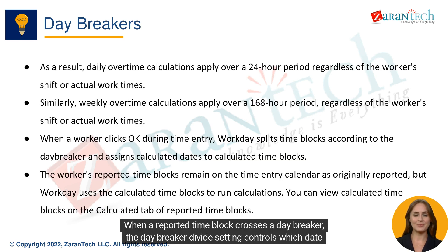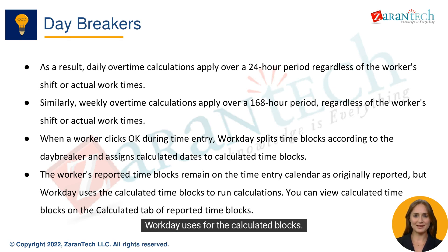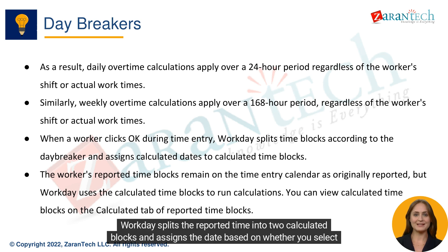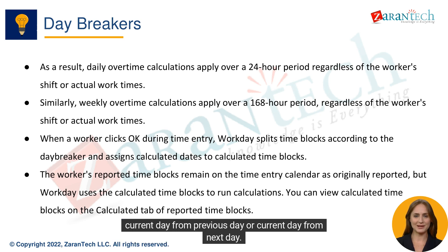When a reported time block crosses a daybreaker, the daybreaker divides setting controls which date Workday uses for the calculated blocks. Workday splits the reported time into two calculated blocks and assigns the date based on whether you select current day from previous day or current day from next day.